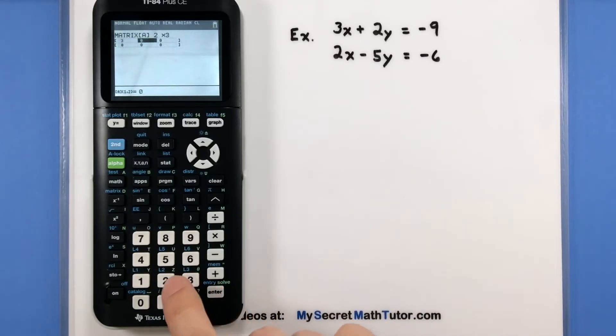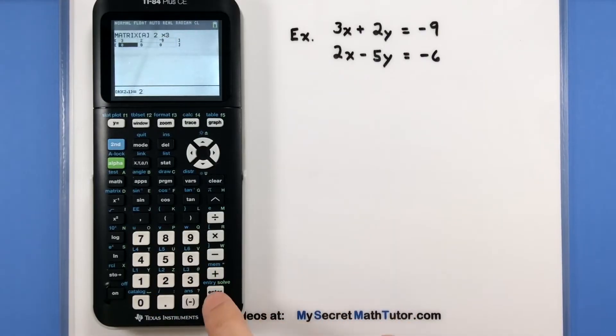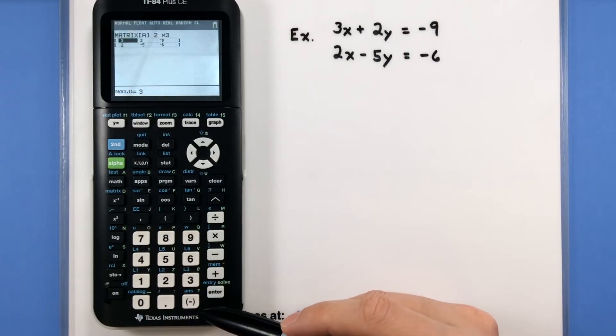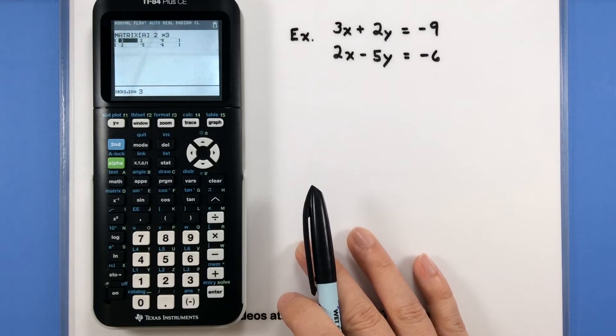So I'll go three, enter, two, enter, negative nine, enter, two, enter, negative five, enter, and negative six. Be careful that you're using that negative sign and not the subtraction symbol. That can cause a lot of problems if you accidentally do that.